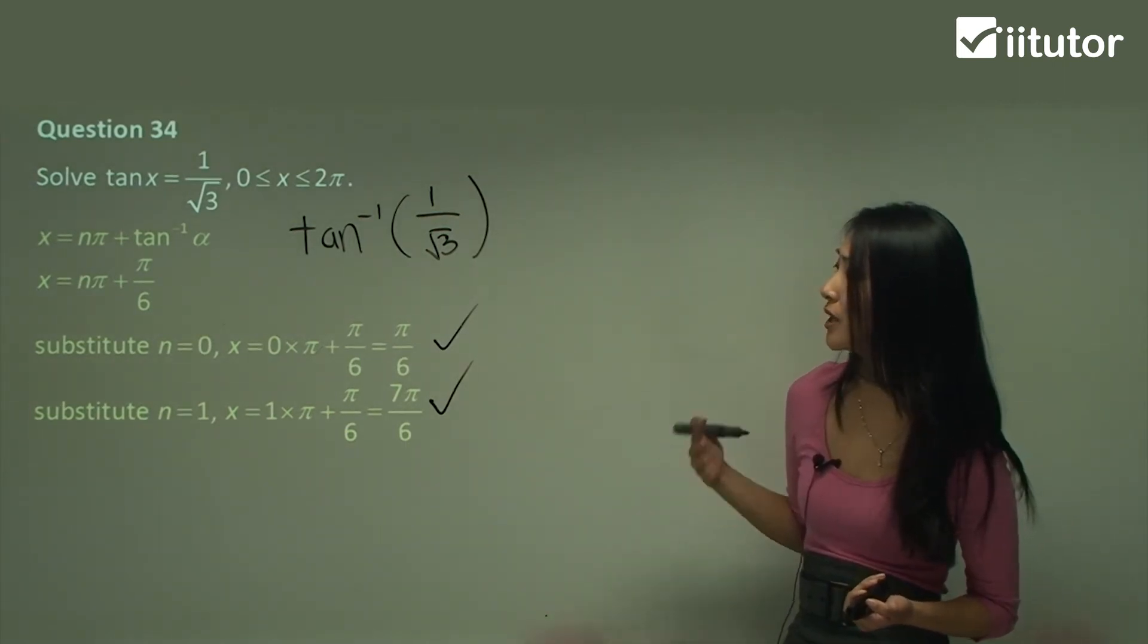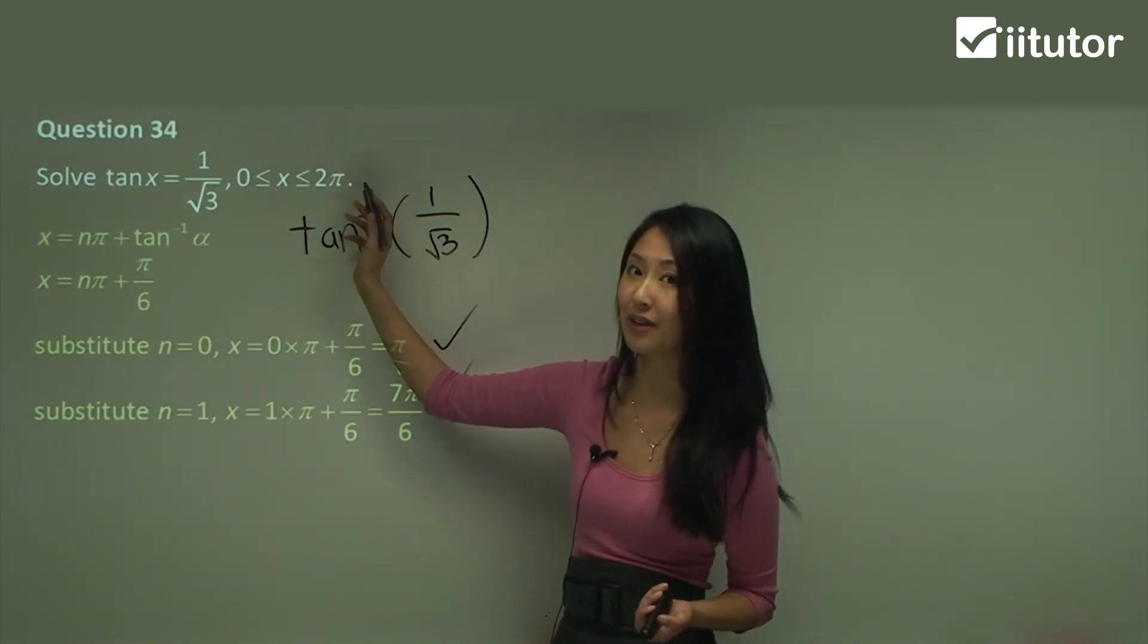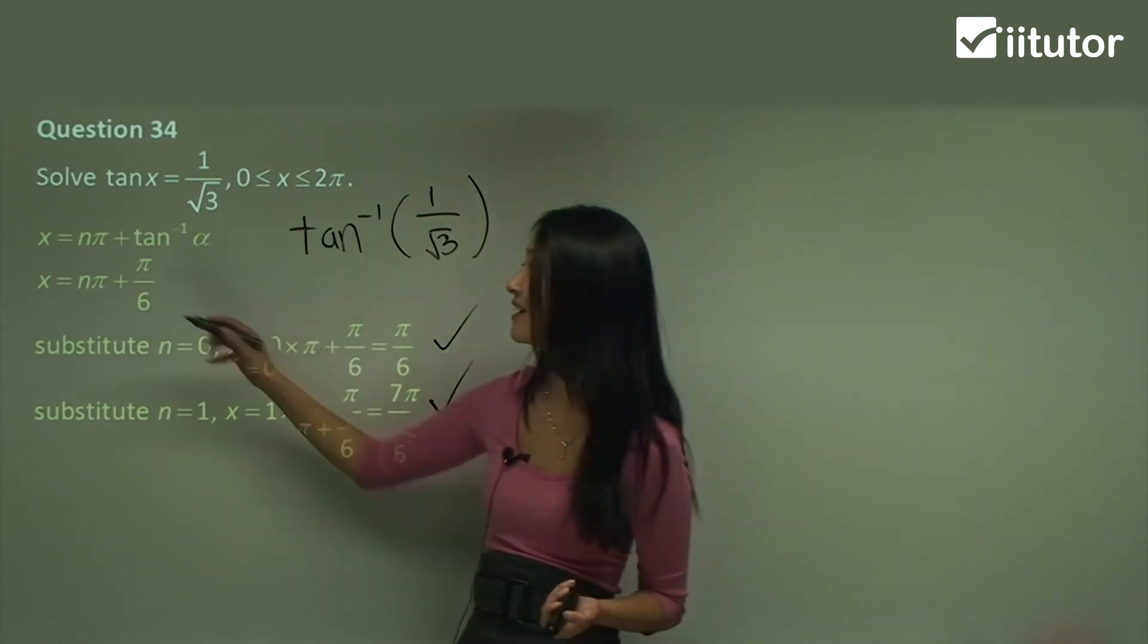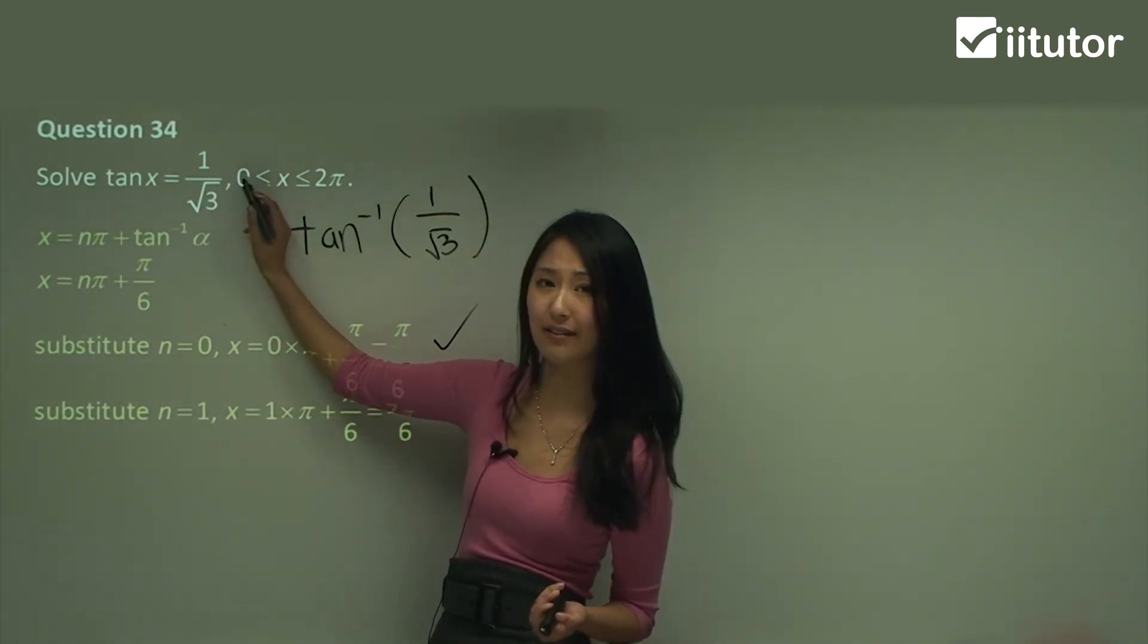Now, if you substitute in two, you're going to have two pi plus this. That's going to be too large. Whereas if you're substituting in negative, negative pi plus pi on six is still not going to make it greater than zero.